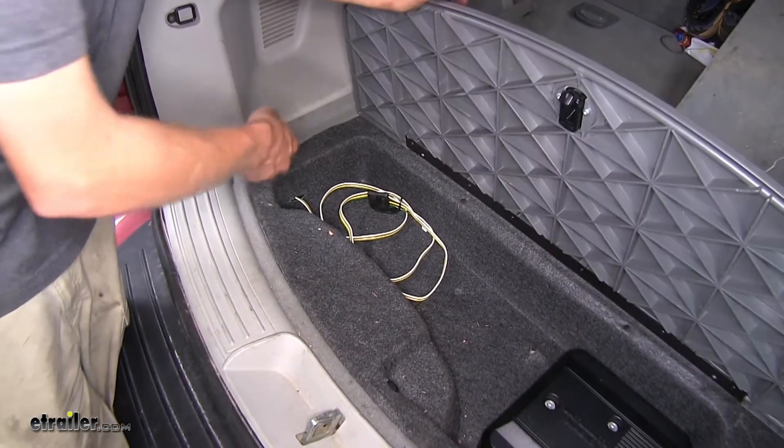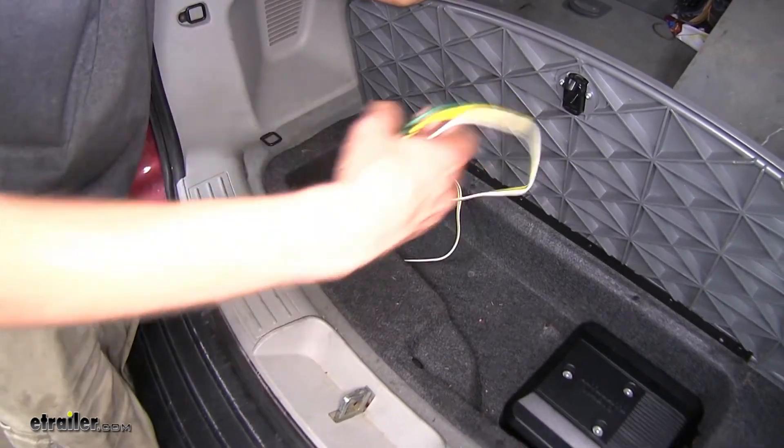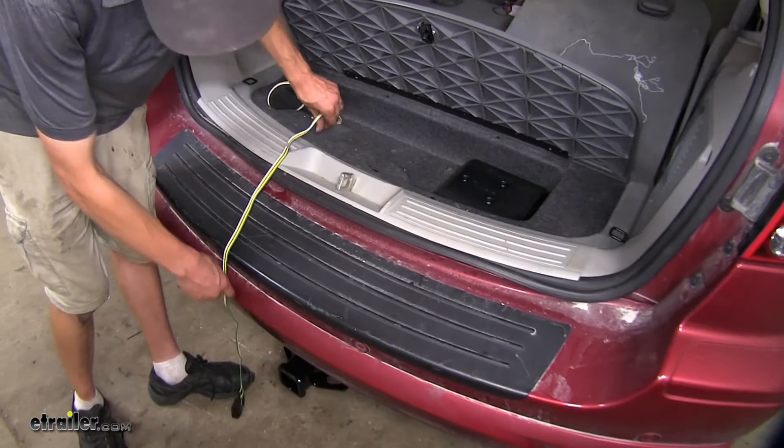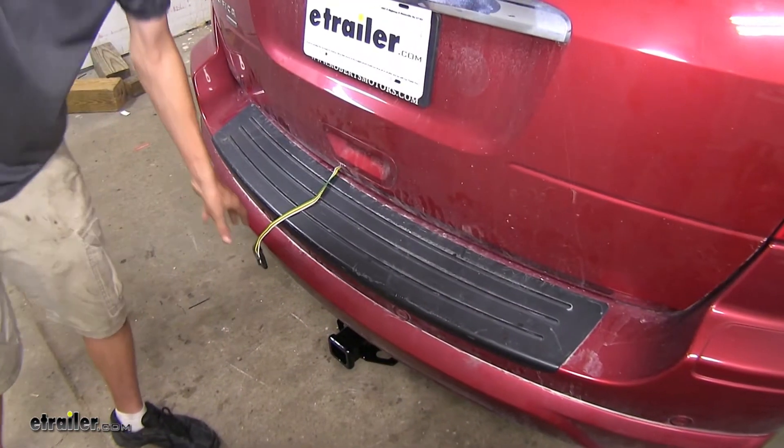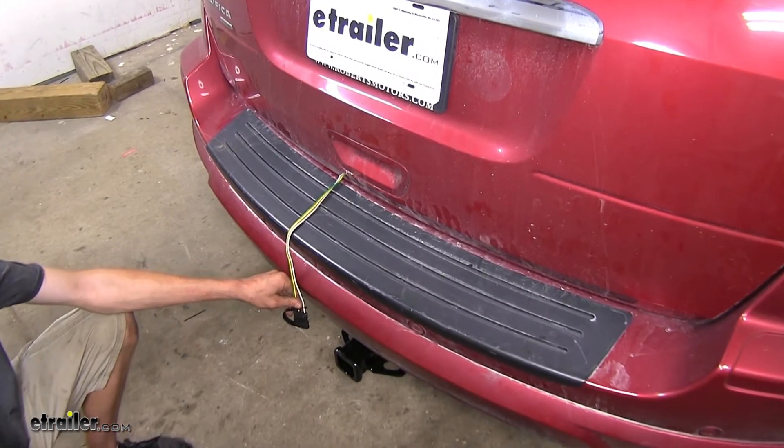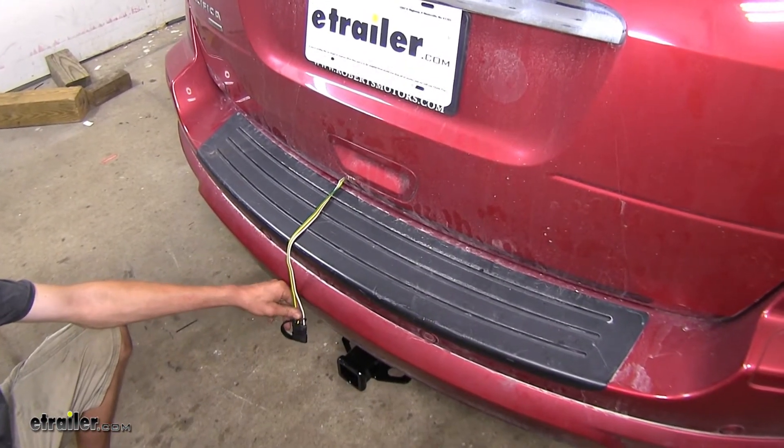Simply lift up on your cargo cover here, take your wiring harness, drape it to the side of your latch, and close your hatch on up. Readily accessible, down by your trailer hitch, making it easy to hook up to your trailer.